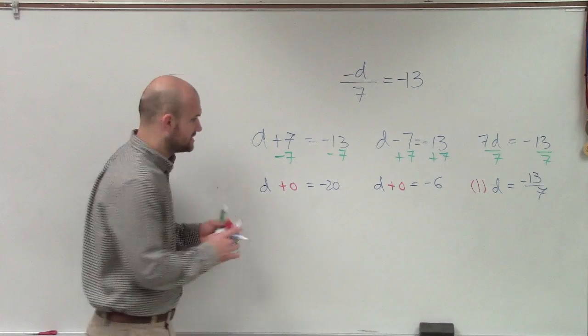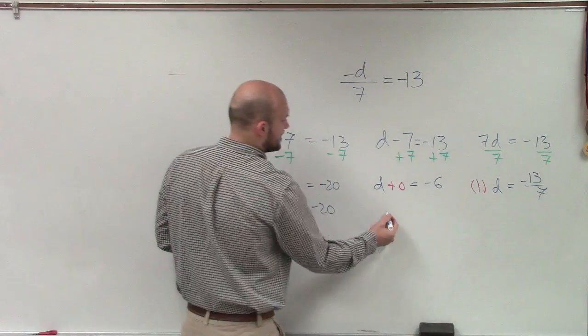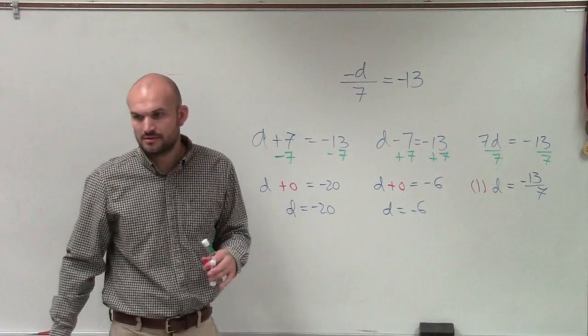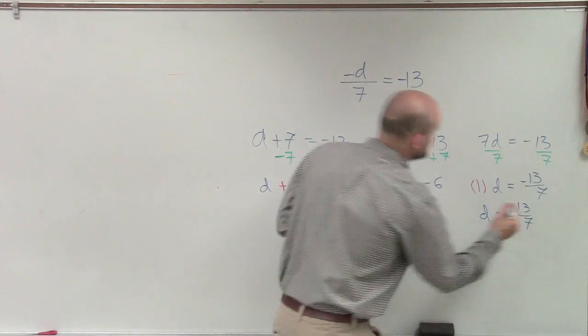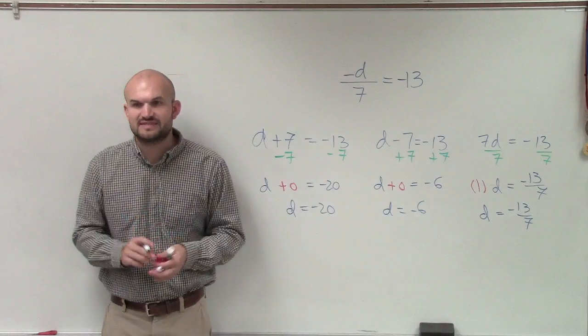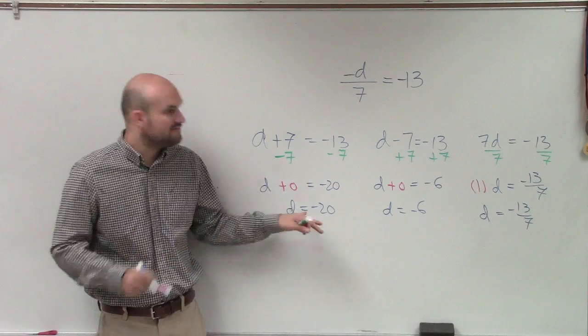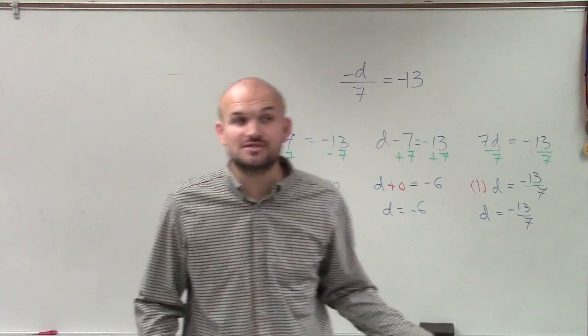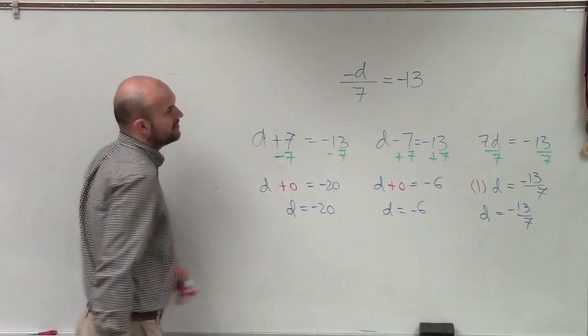What's d plus 0? Is d plus 0 always going to be d? Yes. So our d is d by itself, so d equals negative 20. Here we have d equals negative 6, and what's 1 times d? d. You guys notice that d is going to be by itself. So on each one of these problems, did I solve for the value of d? Did I get d by itself? Yes. Now I know the value of d that's going to make each one of these equations true, and all I did was apply my inverse operations.